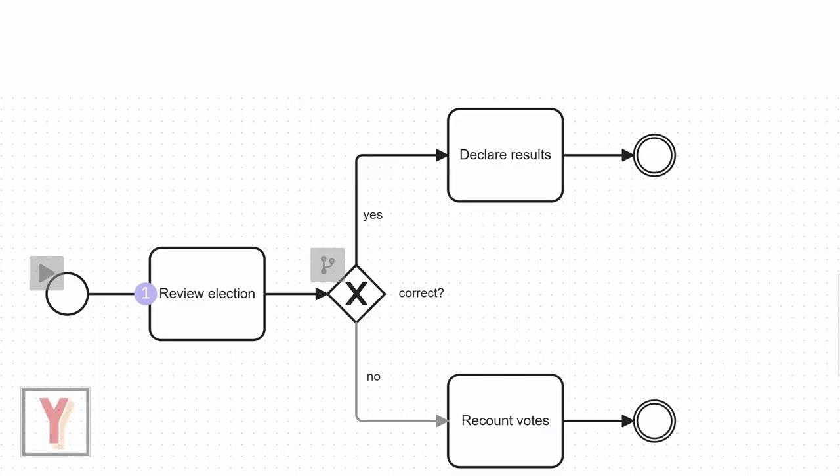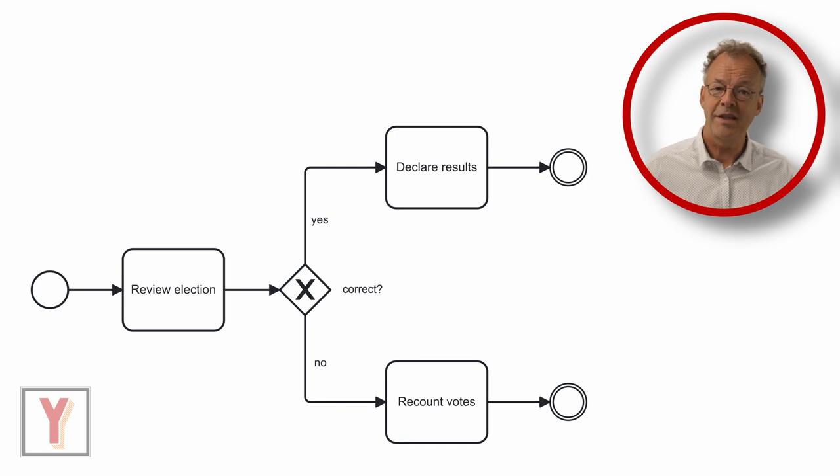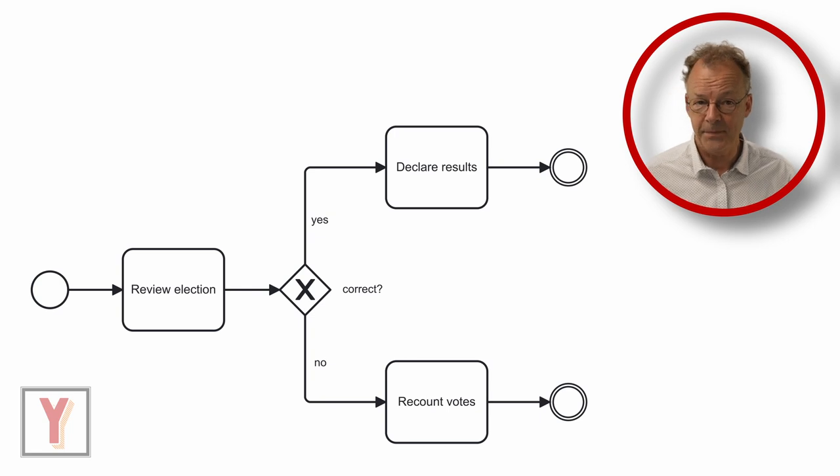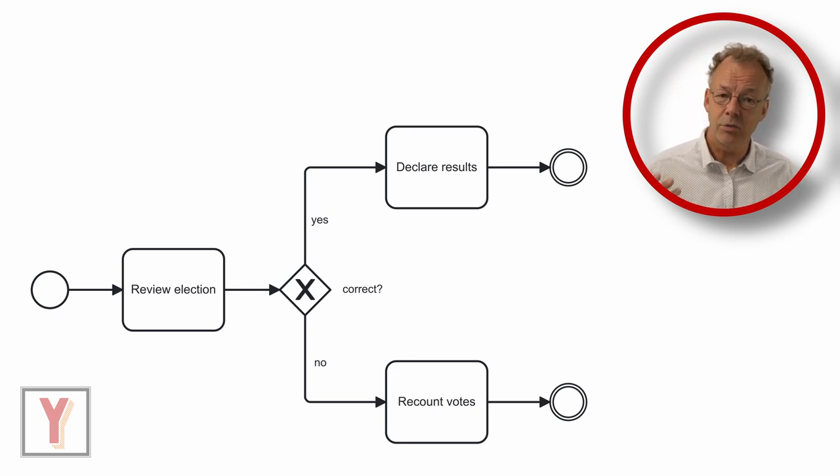Here we have review election and then the question is, is it correct? And if yes, we go to declare results. If after review election we think that it is not correct, we go to recount votes. Note that the answer to the question that determines where to continue comes from a preceding task. In many cases this is the task directly preceding the exclusive gateway as we have seen in the example.